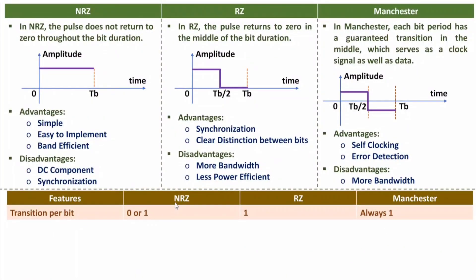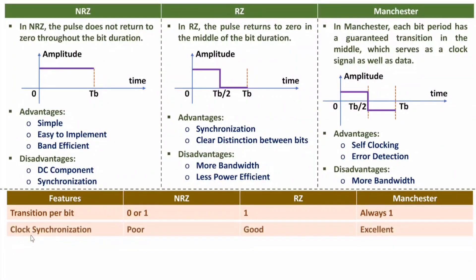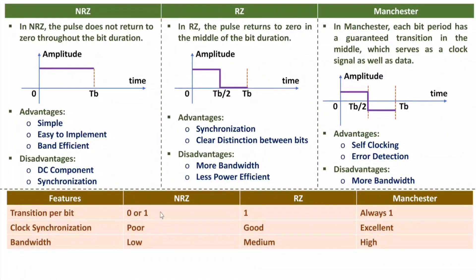Now comparing the three pulses on different parameters. For transitions per bit: NRZ can have zero or one transition — consecutive ones give zero transitions, but transmitting one then zero gives one transition. RZ has one transition per bit. Manchester always has one transition regardless of the bit value. For clock synchronization: NRZ is very poor, RZ is good, and Manchester is excellent. For bandwidth: NRZ requires lower bandwidth, RZ requires medium bandwidth, and Manchester requires the most bandwidth.